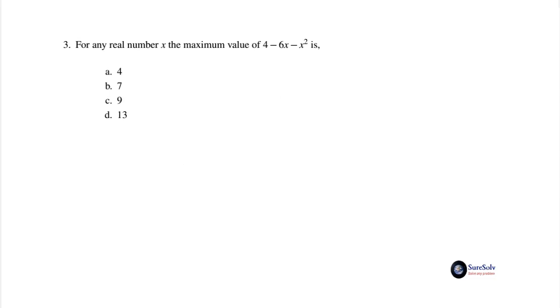The third problem is: for any real number x, the maximum value of 4 - 6x - x² is: option a) 4, option b) 7, option c) 9, and option d) 13. We have to find the maximum value of a quadratic expression.